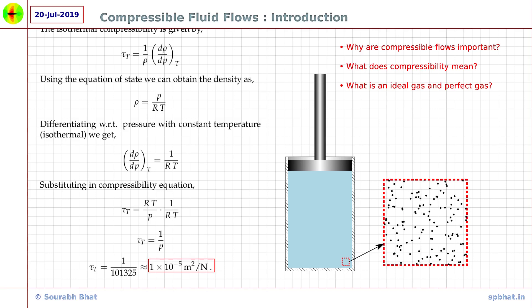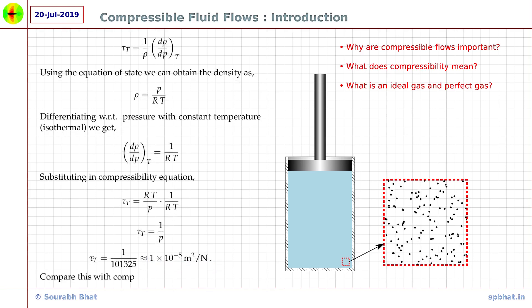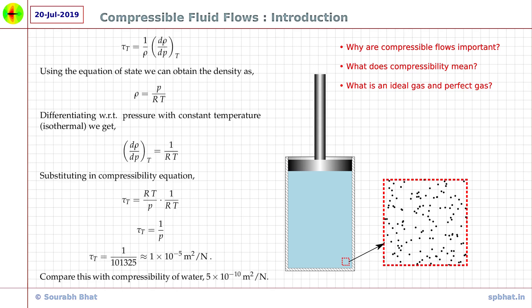Well, that's our answer. If you look up the value of compressibility of water then you will find out that it is approximately 5 into 10 raised to minus 10 meter square per newton. Therefore, air is almost 5 orders of magnitude more compressible than water. And so, in most of the problems involving water or liquids in general, the calculations are performed as if they are incompressible.